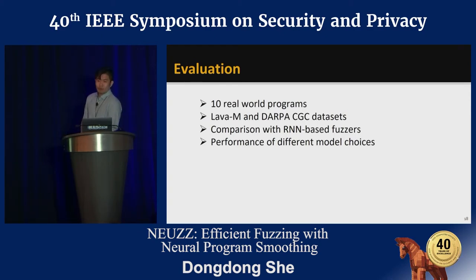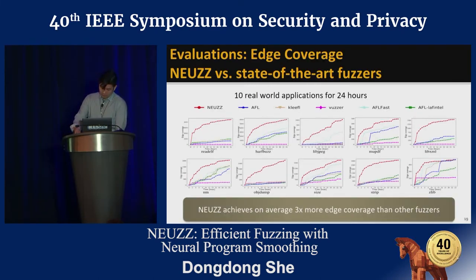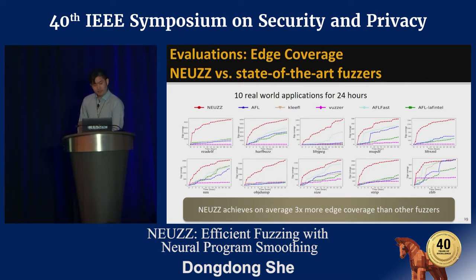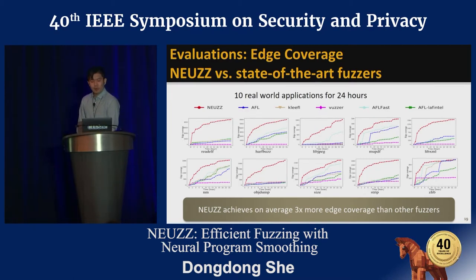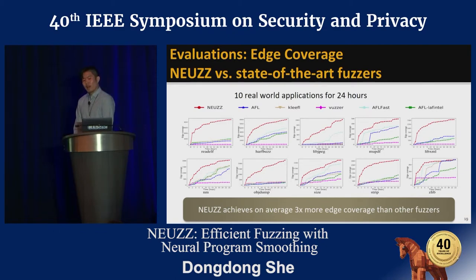Our evaluation consists of four parts: real-world programs, LavaM, DARPA-CGC dataset, comparison with an RN-based fuzzer, and performance of different model choices. We evaluated NOOS on edge coverage against five state-of-the-art fuzzers including AFL, CL-AFL, VUzzer, AFL-Fuzz, and AFL-Lava-Intel. Evaluations were performed on ten real-world applications for 24 hours, covering six popular file formats including ELF binary, JPEG, PDF, XML, Zlib, and HarfBuzz font files. The results show that NOOS outperforms all five fuzzers on ten real-world programs and achieves, on average, three times more edge coverage.